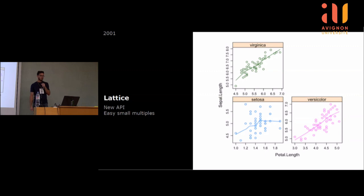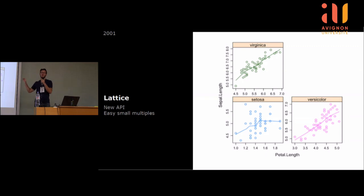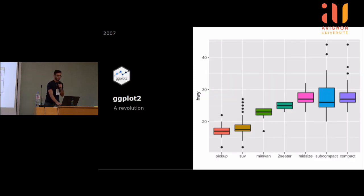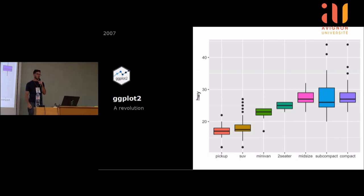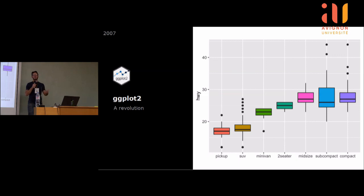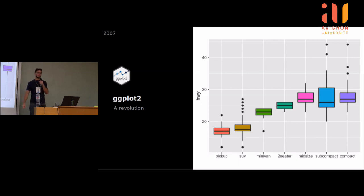R a pas mal évolué. En 2001, la librairie Lattice est sortie avec une nouvelle API plus instinctive, aidant beaucoup pour les small multiples. Mais la vraie révolution, ça a été en 2007 avec le déploiement de GGplot2. GGplot2, c'est vraiment énorme — même en dehors de la communauté R. Dans la communauté Python, il y a un package qui reproduit la syntaxe de GGplot2, et même dans le monde JavaScript il y a un paquet qui utilise la même syntaxe. Tout le monde connaît GGplot2.